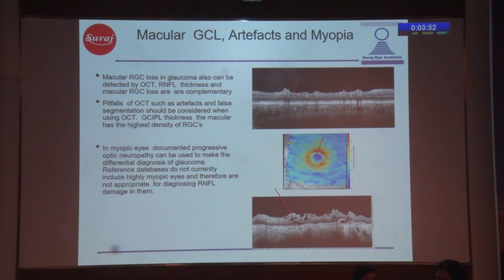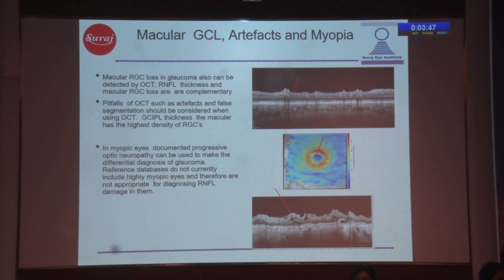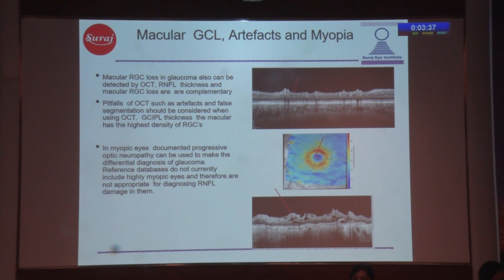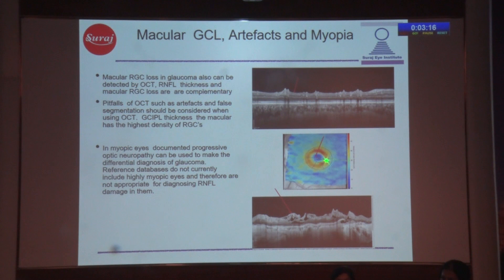There are many pitfalls of OCT, and one of the most important is artifacts and false segmentation. In this patient, the retinal nerve fiber layer has bottomed out, so you'll get segmentation errors and will not be able to follow up — the retinal nerve fiber layer is unlikely to be significantly helpful. The second photograph is a ganglion cell deviation map, and the difficulty here is because of the structure of the fovea: the central area, which is not supposed to have ganglion cells, has expanded a little bit, causing difficulty in assessing the deviation map.